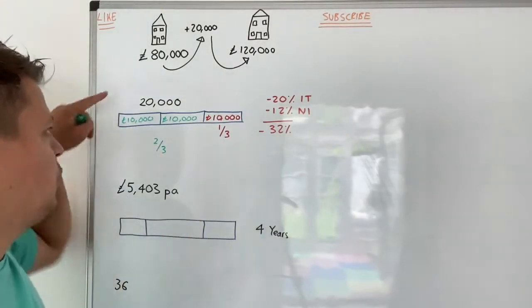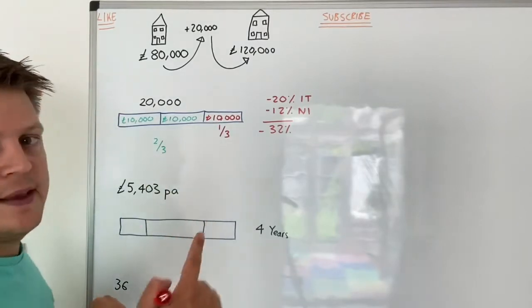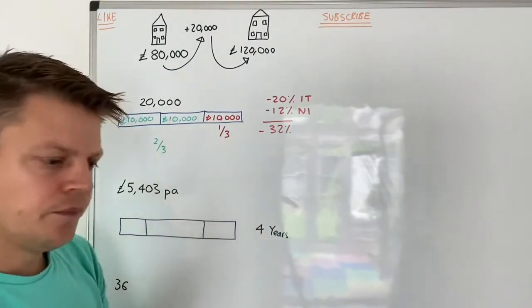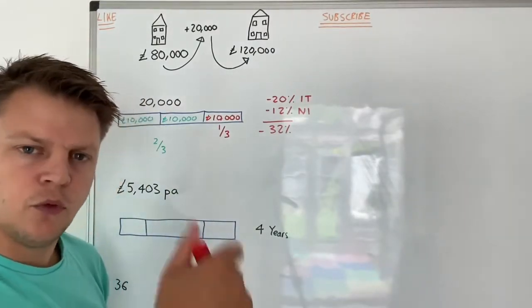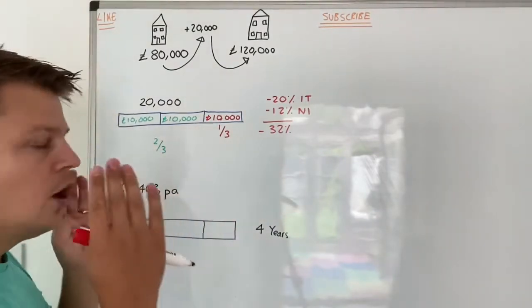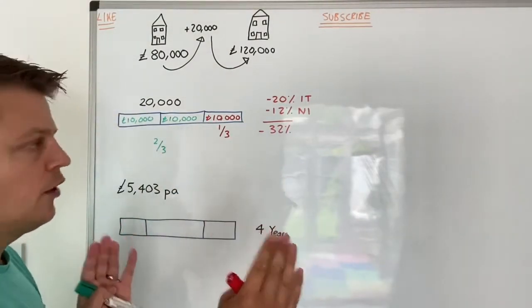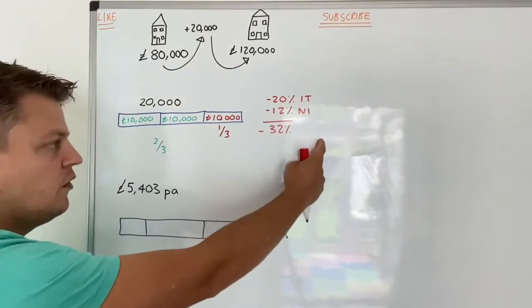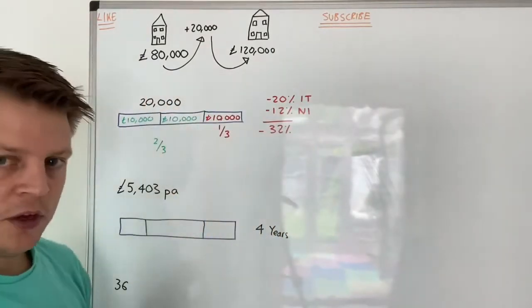By the way, if you want to check this, you can do £20,000 divided by 0.68 and it gives you about £29,400. But for round numbers, earn £30,000 as a basic rate taxpayer, net off your expenses, and you end up with £20,000 after a year.